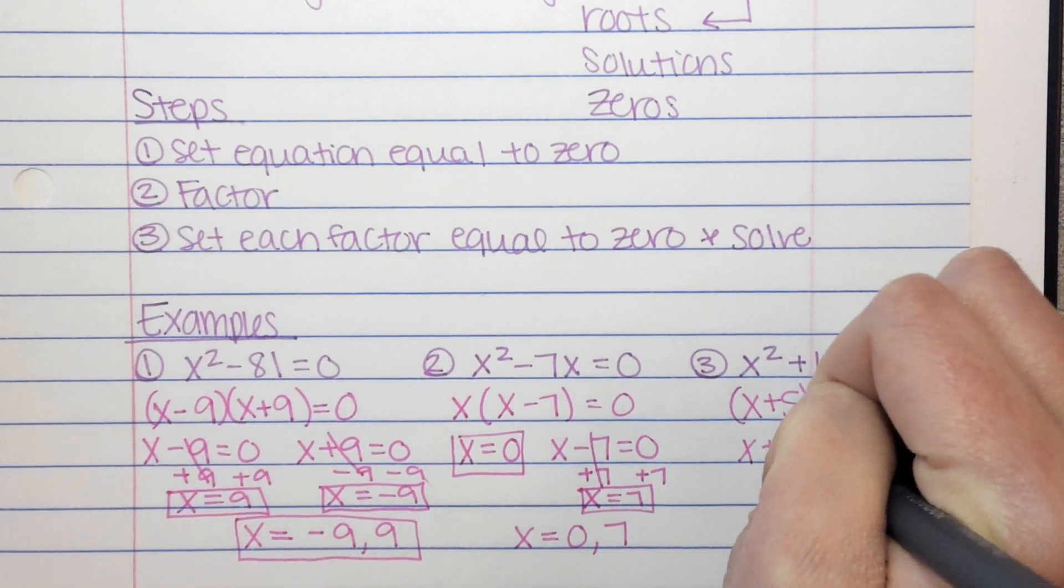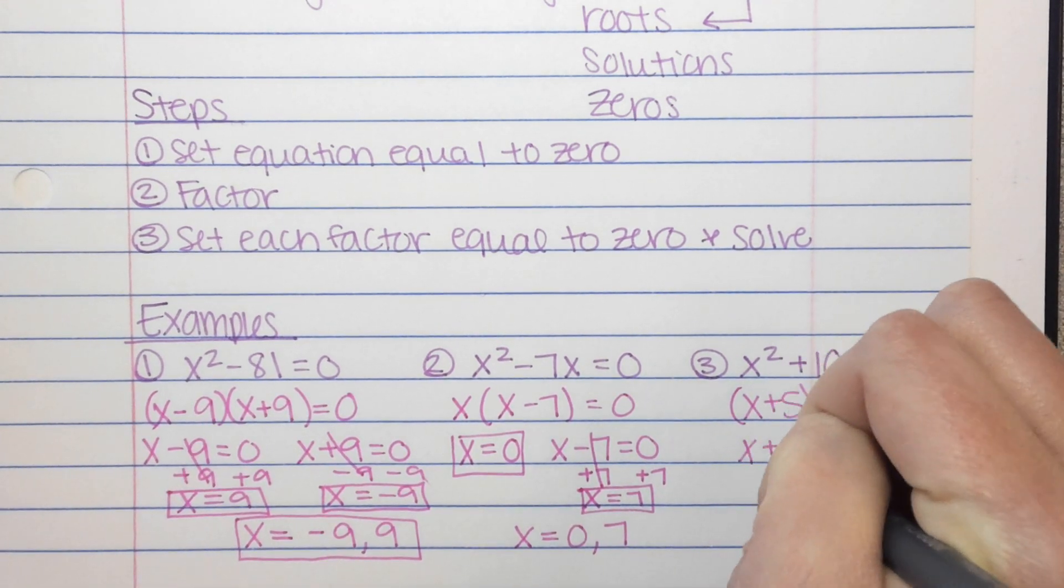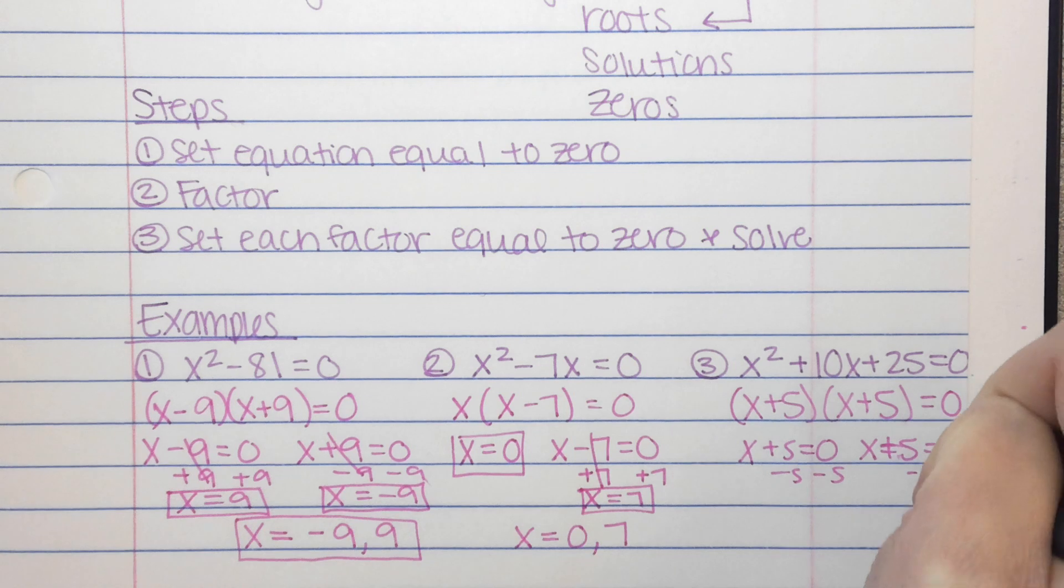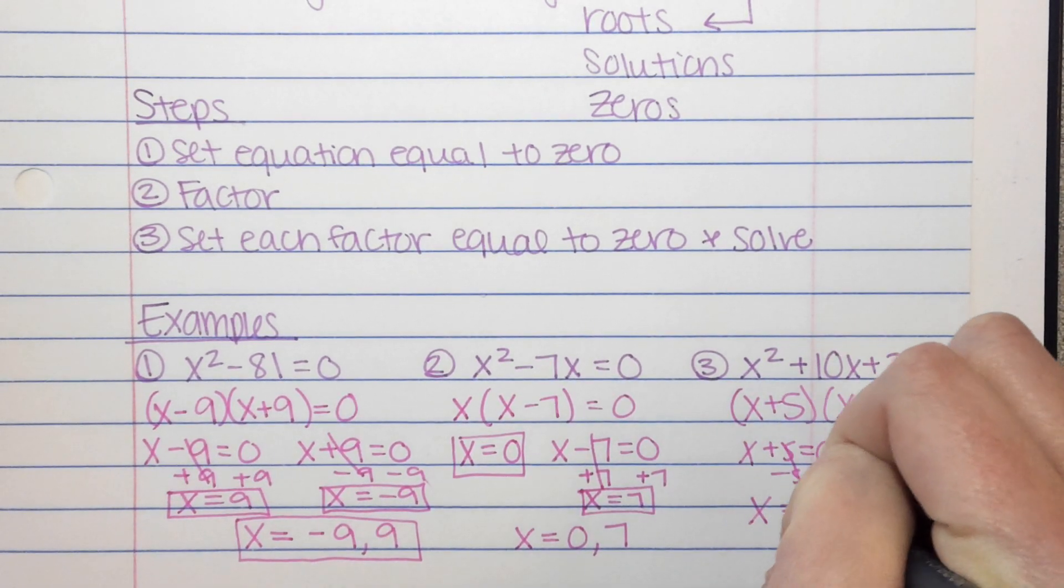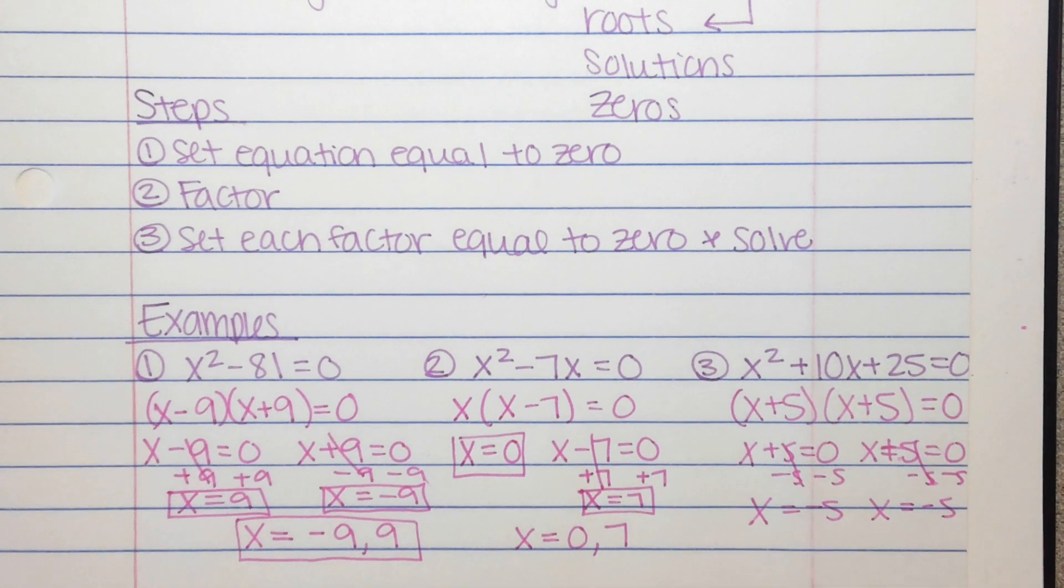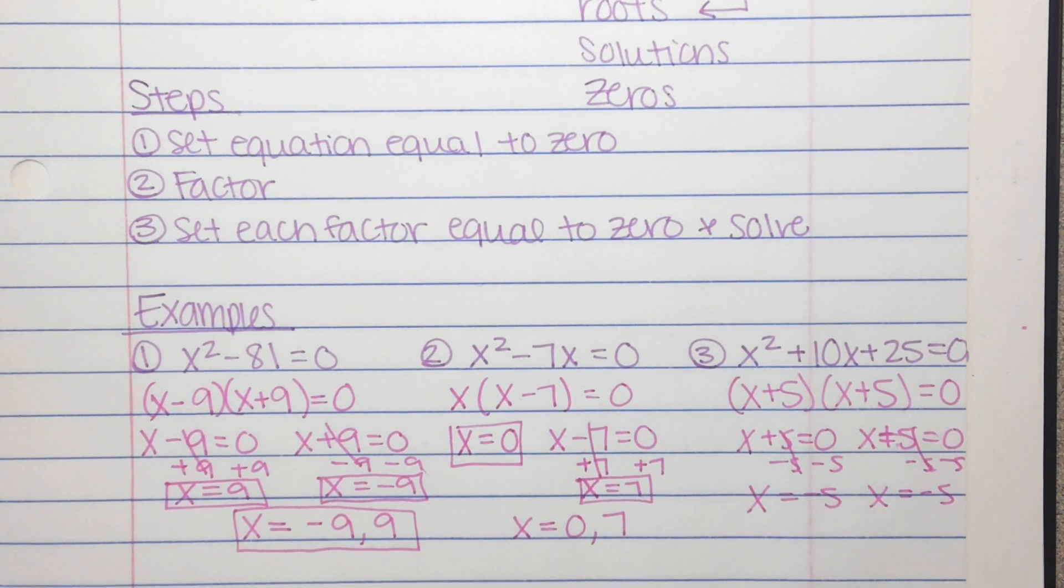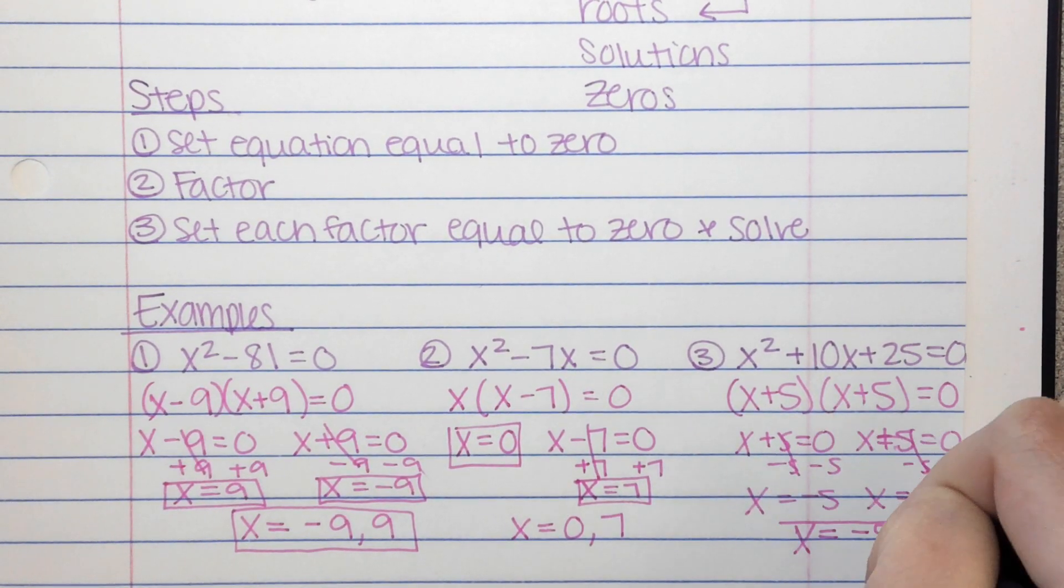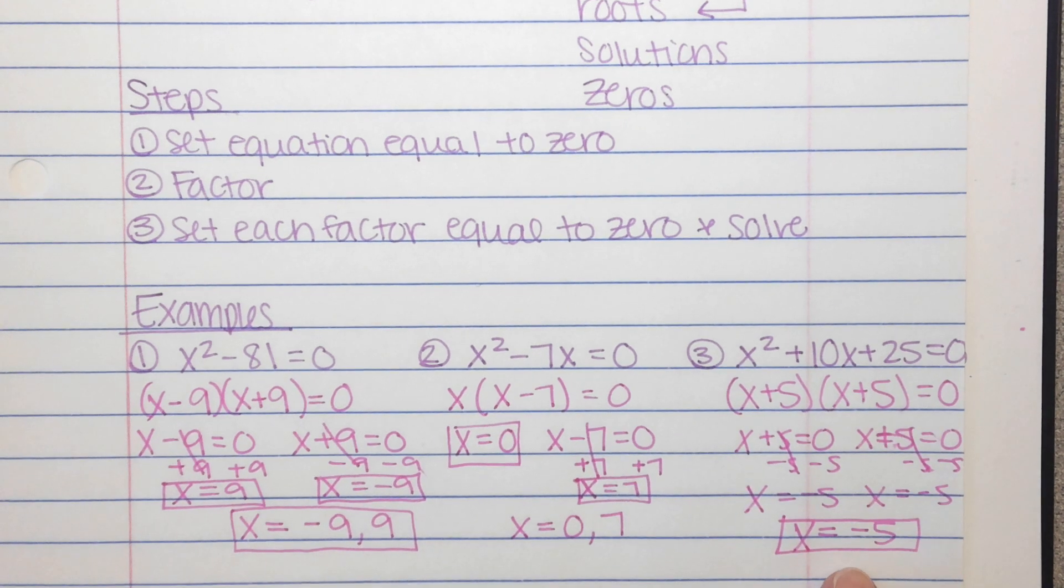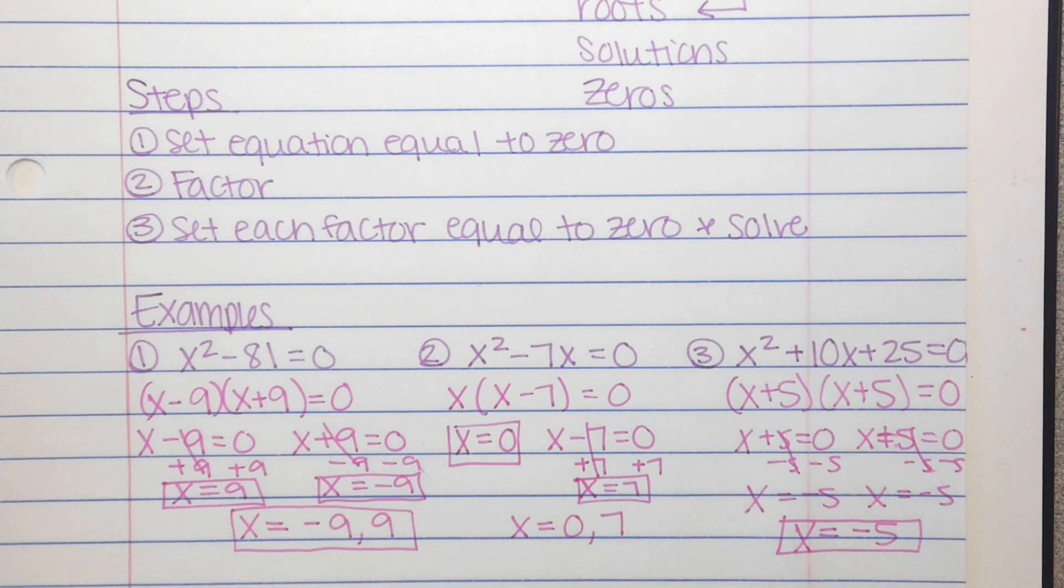x plus 5 equals 0, x plus 5 equals 0. I subtract 5, and you'll notice here you get x equals negative 5 and x equals negative 5. So that's what I said earlier. Occasionally you'll get one where the answer is just one solution or one intercept, one zero. And this is one of those. So that one, you just have one solution, and it's x equals negative 5.